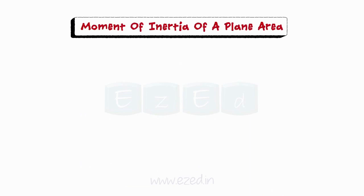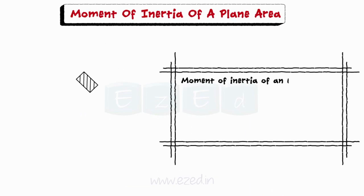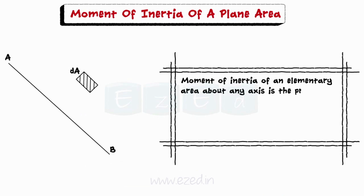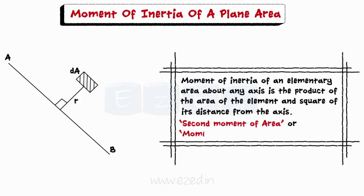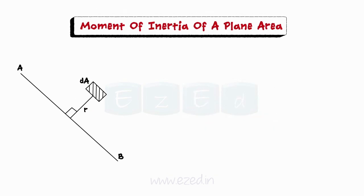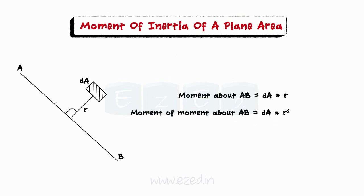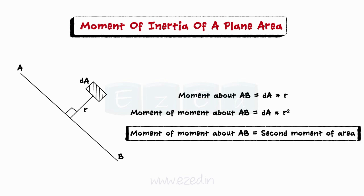Let us now learn about moment of inertia of a plane area. Moment of inertia of an elementary area about any axis is the product of the area of the element and the square of its distance from the axis. This is called as the second moment of area or moment of inertia. In simple words, we will first take the moment of the area about the axis and then take the moment of this moment about the same axis, thus taking the second moment of the area.